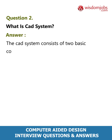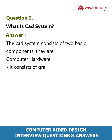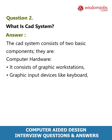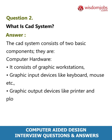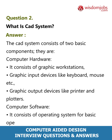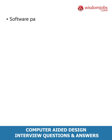Answer: The CAD system consists of two basic components. Computer hardware: it consists of graphic workstations, graphic input devices like keyboard and mouse, graphic output devices like printers and plotters. Computer software: it consists of operating system for basic operations and software packages used for geometric modeling.